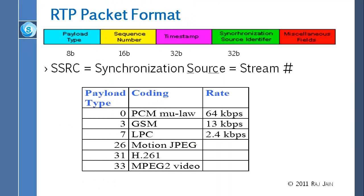RTP has a payload type field. Payload types include, for example, 64 kilobit voice, 13 kilobit voice, 2.4 kilobit voice, Motion JPEG video, H.261 video, and MPEG-2 video — all standardized numbers. There is also a sequence number, which is simply the packet number. Then there is a timestamp — a standard GMT timestamp. Then there is a synchronizing source identifier (SSRC), which is basically the stream number. In a session you might have many parallel streams: an audio stream, a video stream, a screen stream, and a data stream — each identified by its SSRC.